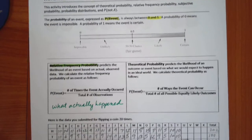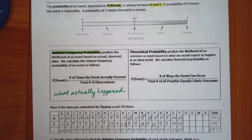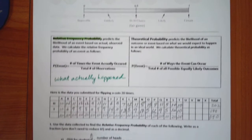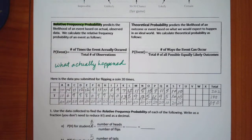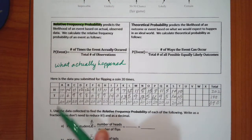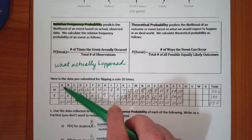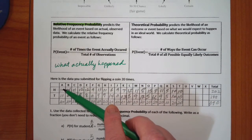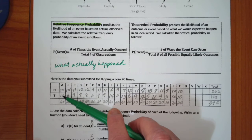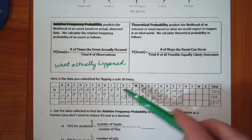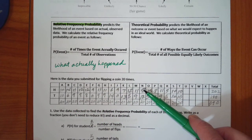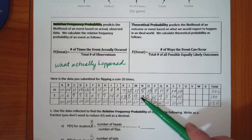We'll talk about theoretical probability in a minute, but let's talk about what we did with flipping the coin on your test — and thank you for doing that. These are the relative frequencies of what happened. Student A got 10 heads and 10 tails out of 20. Student N got 8 heads and 12 tails.